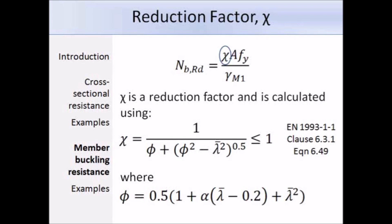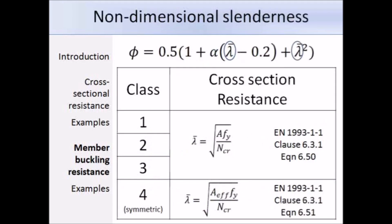Before we can work out the values of phi and chi, we need to know what lambda bar and alpha are. This slide tells us how to work out lambda bar, which is the non-dimensional slenderness. We use gross area for classes 1, 2, and 3, and effective area for class 4 sections. Lambda bar equals the square root of the area times the yield strength divided by the critical buckling load.